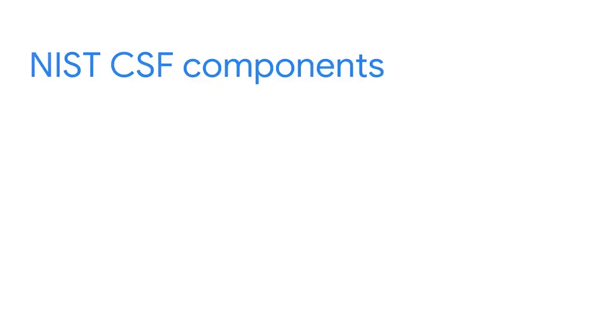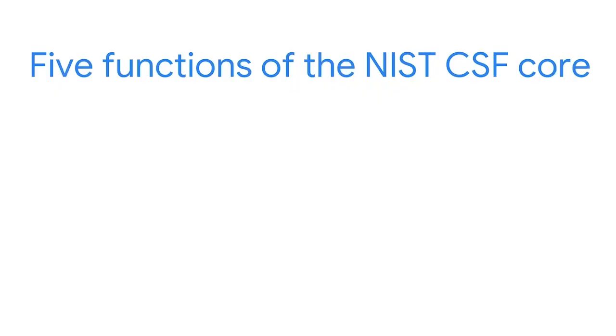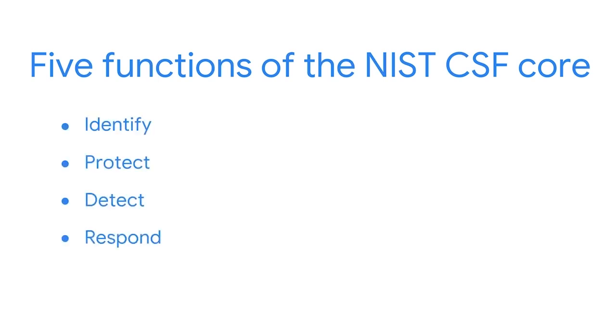Commonly known as the CSF, this framework was developed to help businesses secure one of their most important assets: information. The CSF consists of three main components — the core, its tiers, and its profiles. The core is a simplified version of the functions, or duties, of a security plan. The CSF core identifies five broad functions: identify, protect, detect, respond, and recover. Think of these categories of the core as a security checklist.